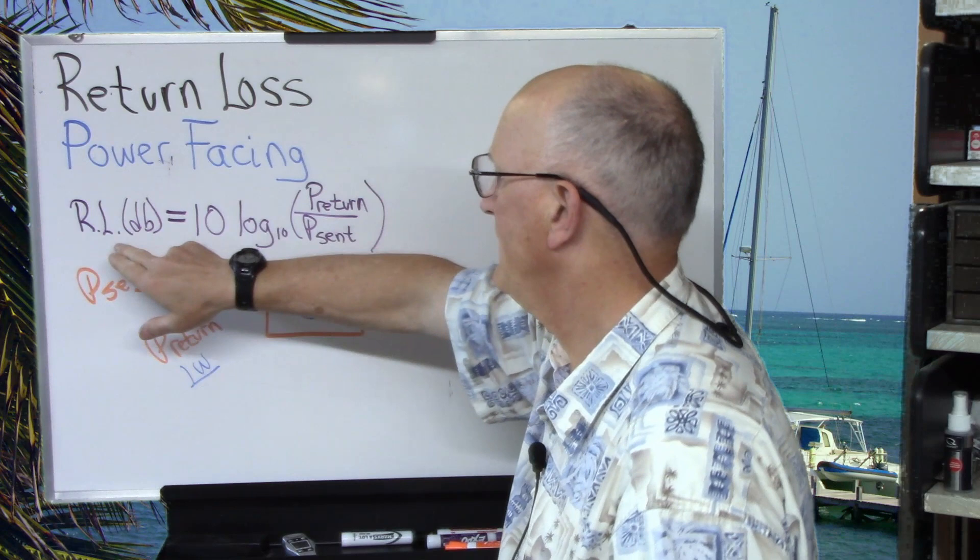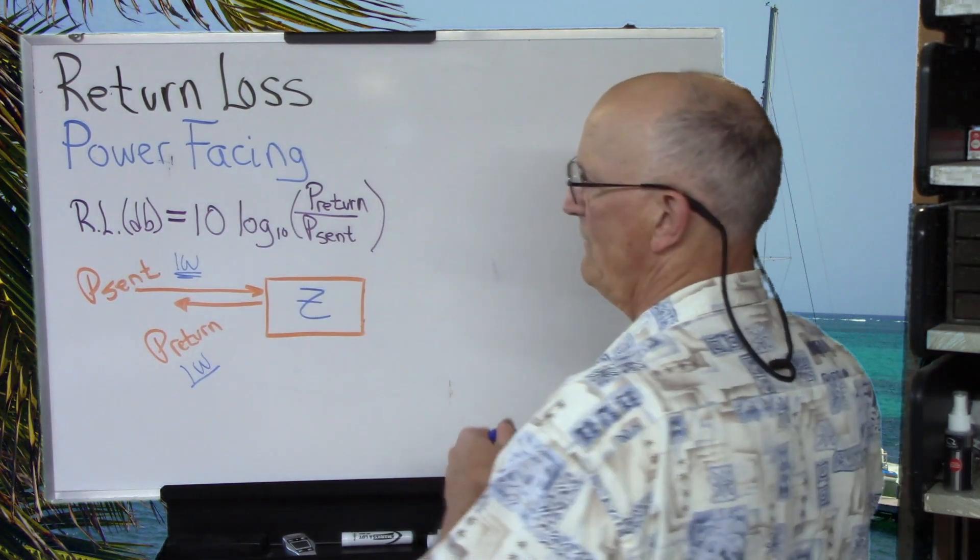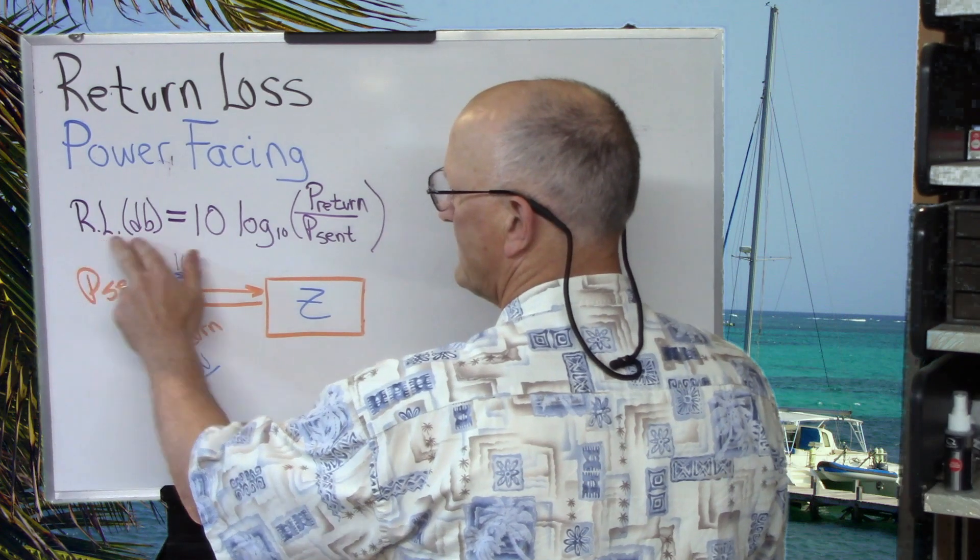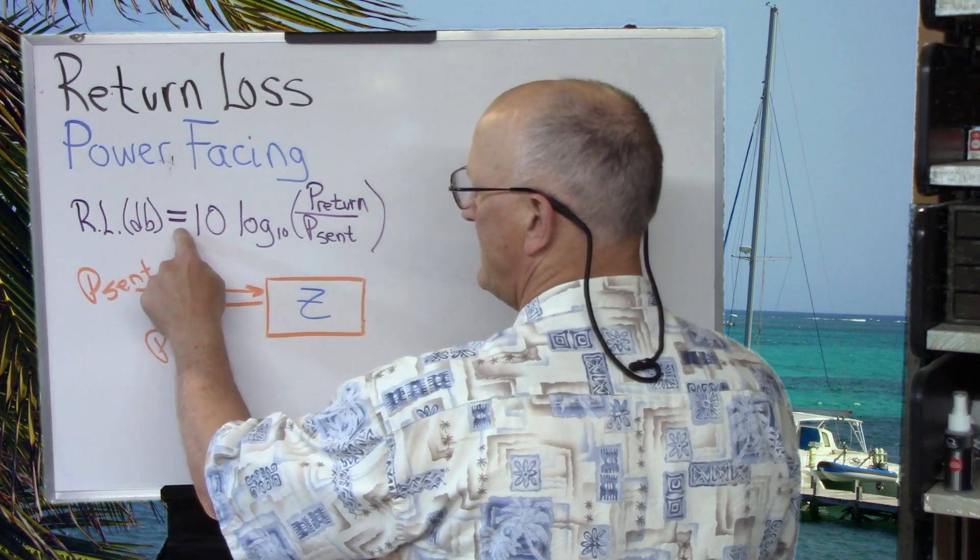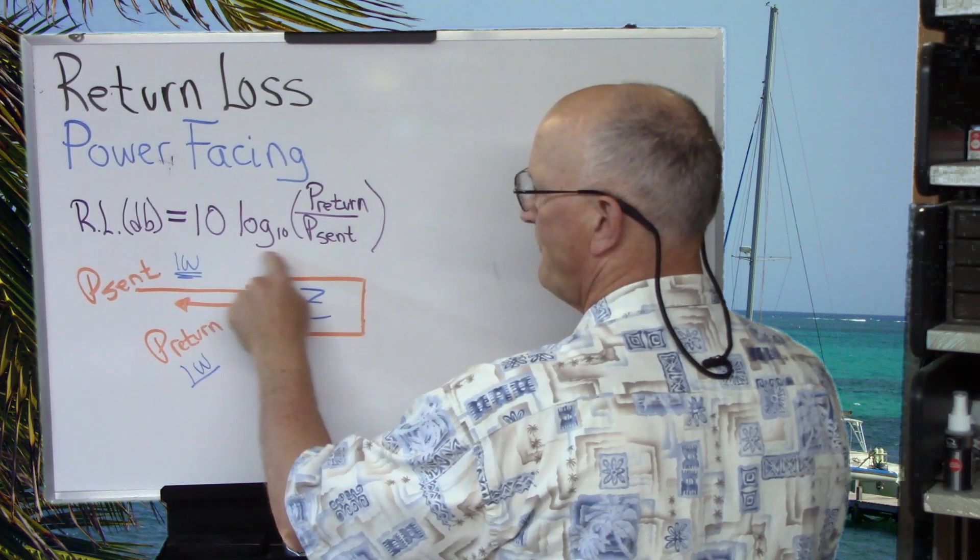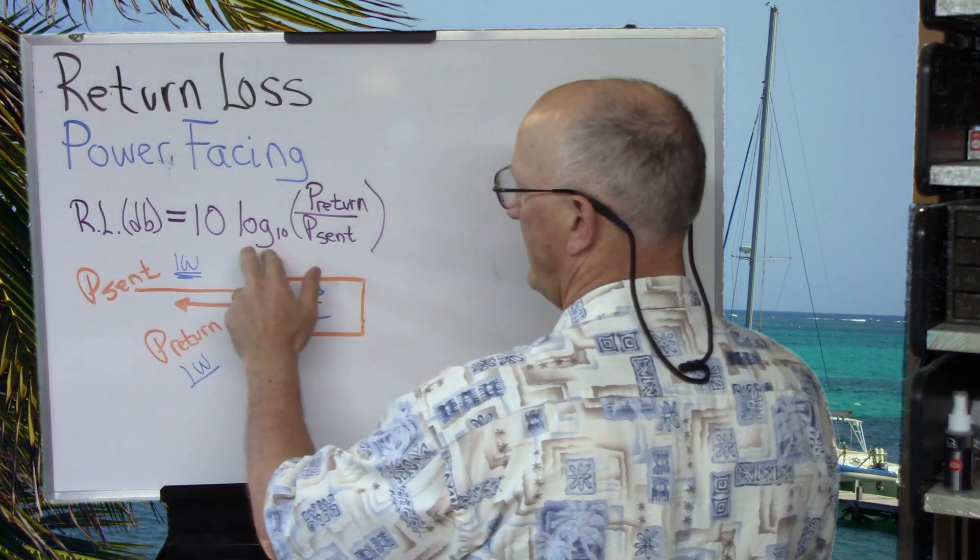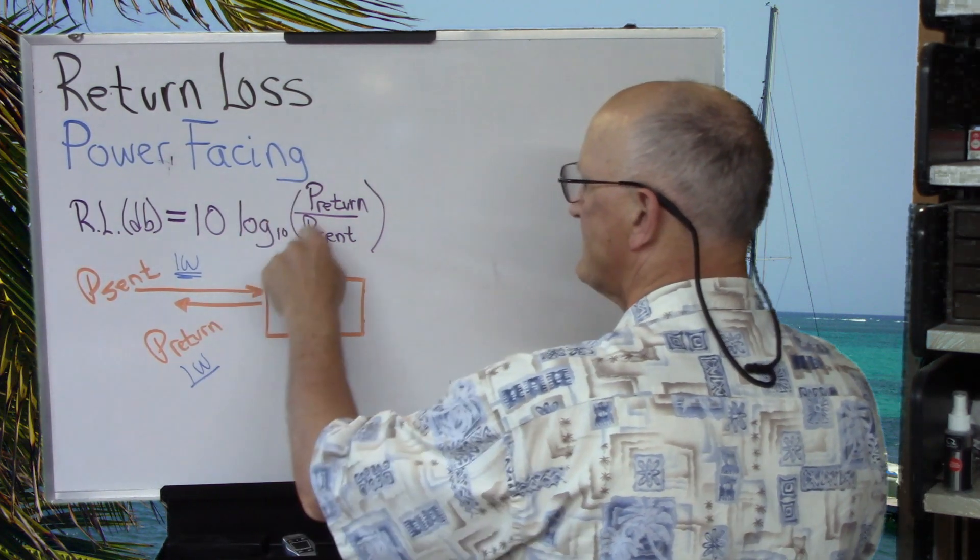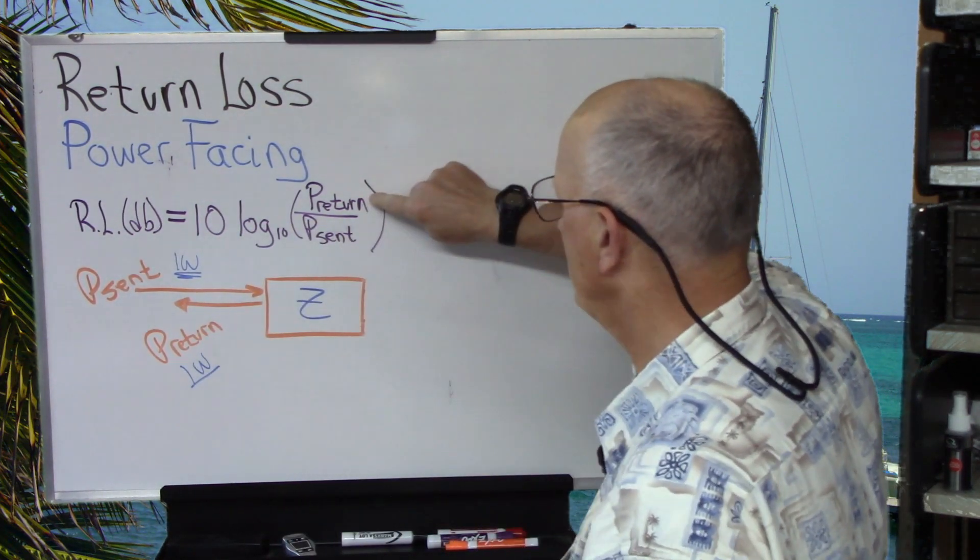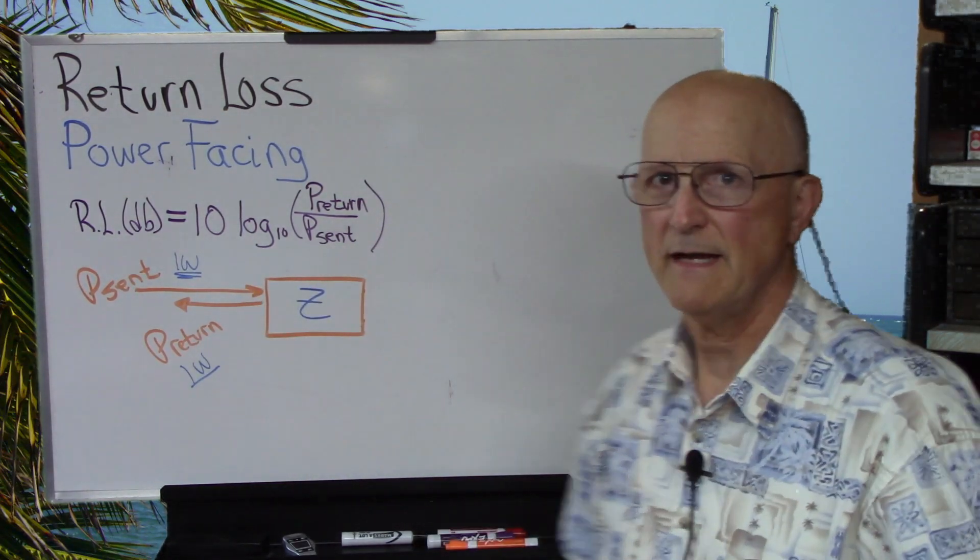Now, return loss is in dB, being a power type thing, they do it in dB. So, return loss in dB is equal to 10 times the log to the base 10, which is a standard logarithm. So, it's 10 times the log of this ratio. The return power divided by the power that's sent out.